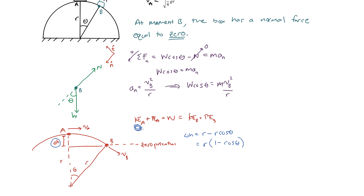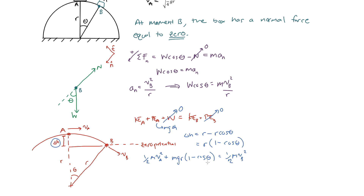Rewriting the energy equation: one-half·m·v_a² plus m·g·r(1 - cosθ) plus zero work (since there are no external forces besides gravity, which is already accounted for in potential energy) equals one-half·m·v_b². Our goal is to solve for v_b² so we can plug it into the normal force equation and find angle theta.